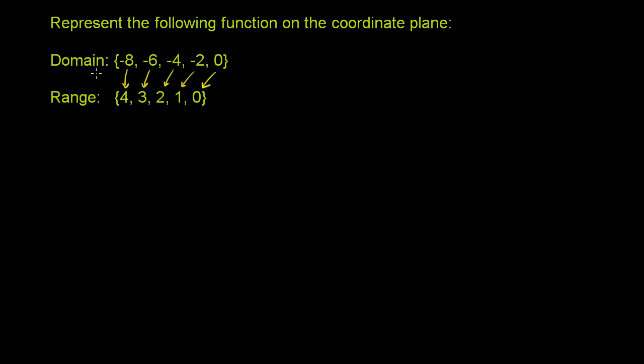Because you could have another function with this exact same domain and range where the mapping is different, where negative 8 maps to 3 and negative 6 maps to 4. This domain and range could be for many different functions.